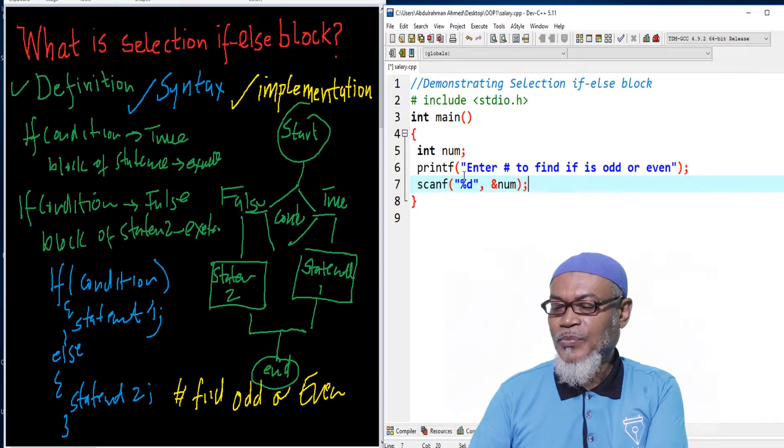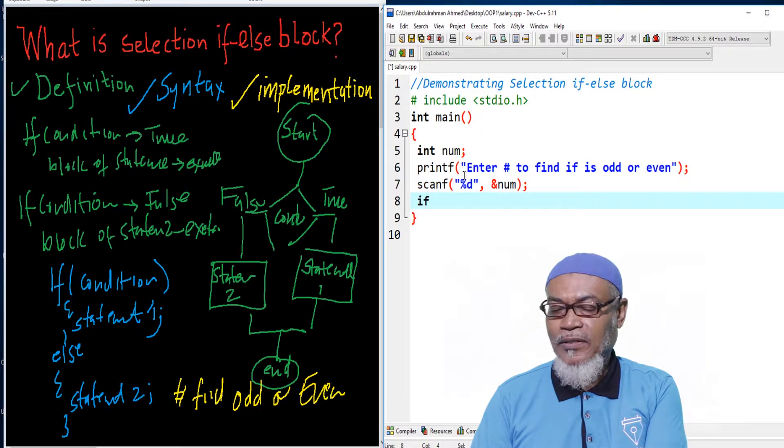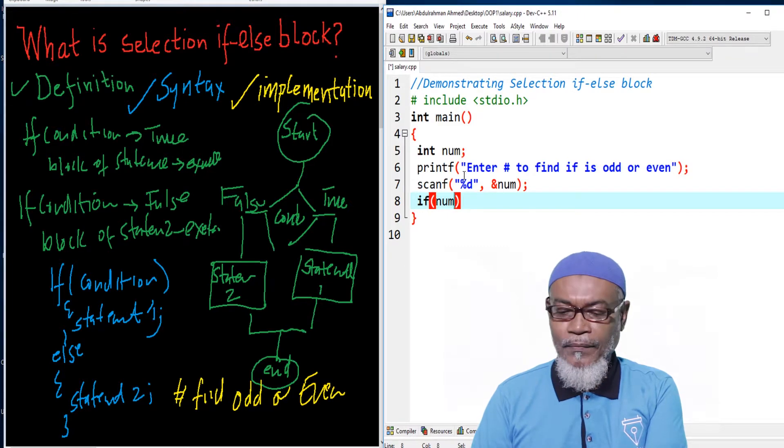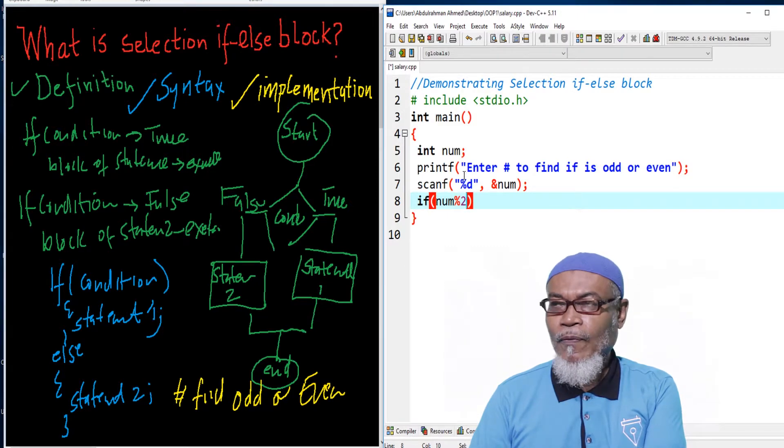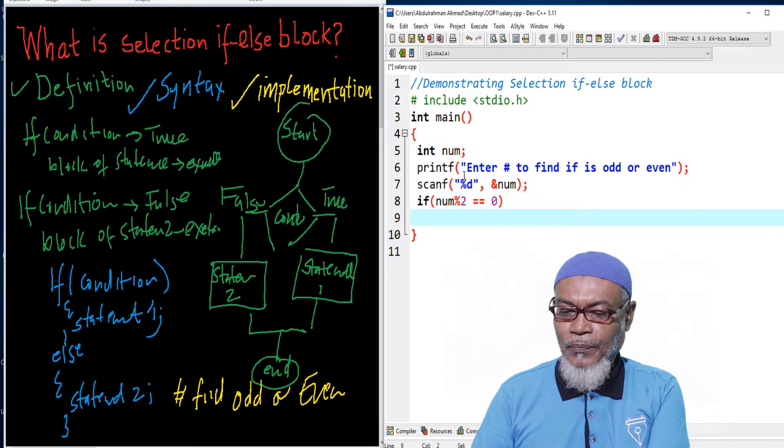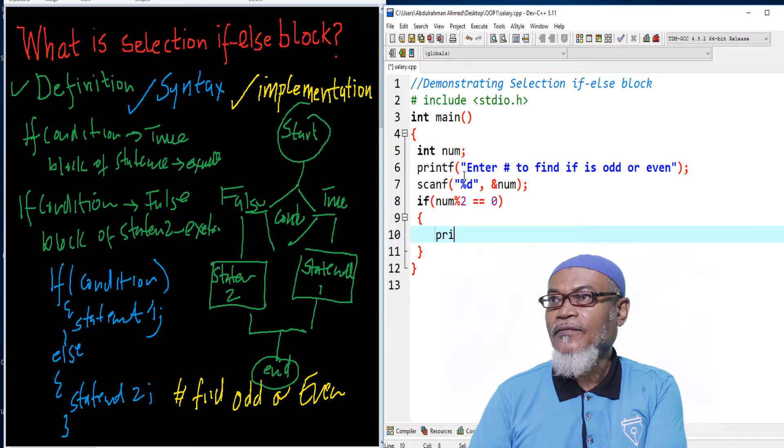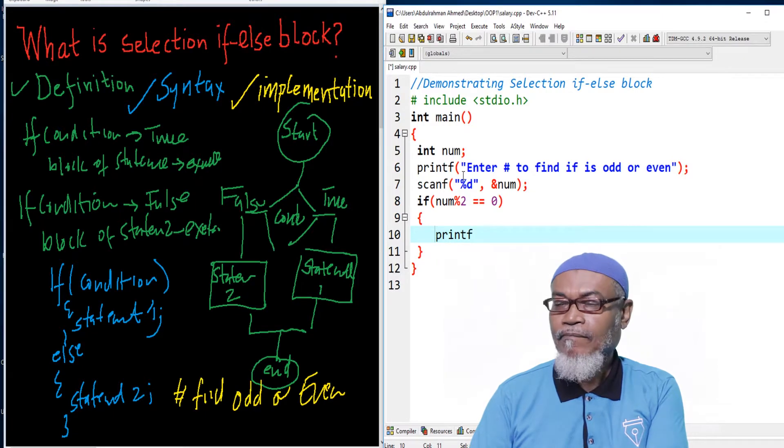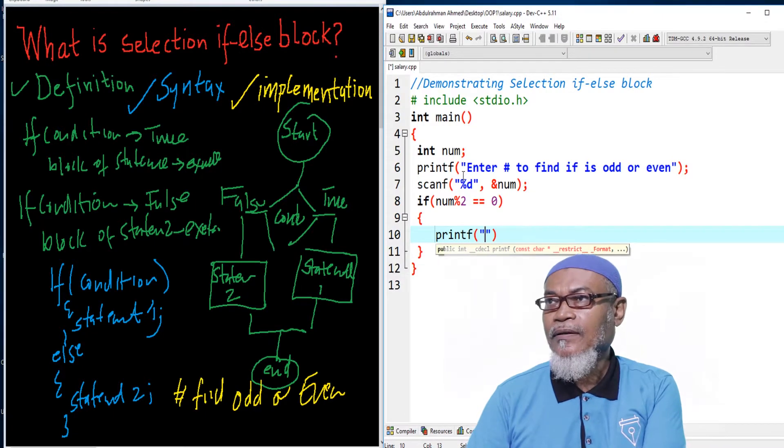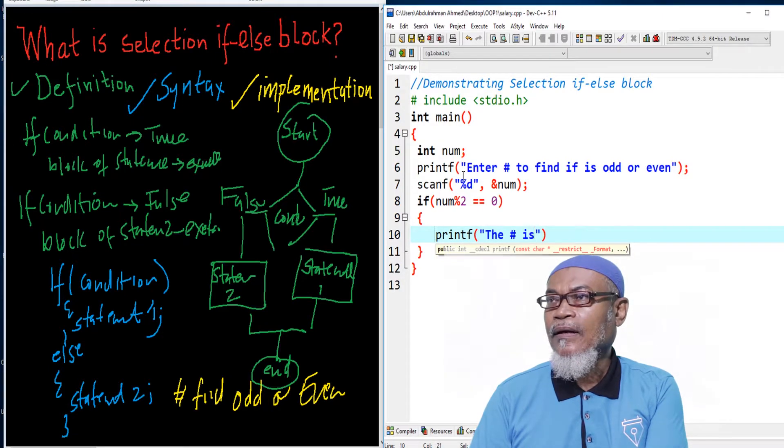Then we execute that statement, and from here we're putting our if statement. What will be the condition? If the number num modulus 2 is equal to 0, then what are we supposed to do? We print and tell the user the number is even.